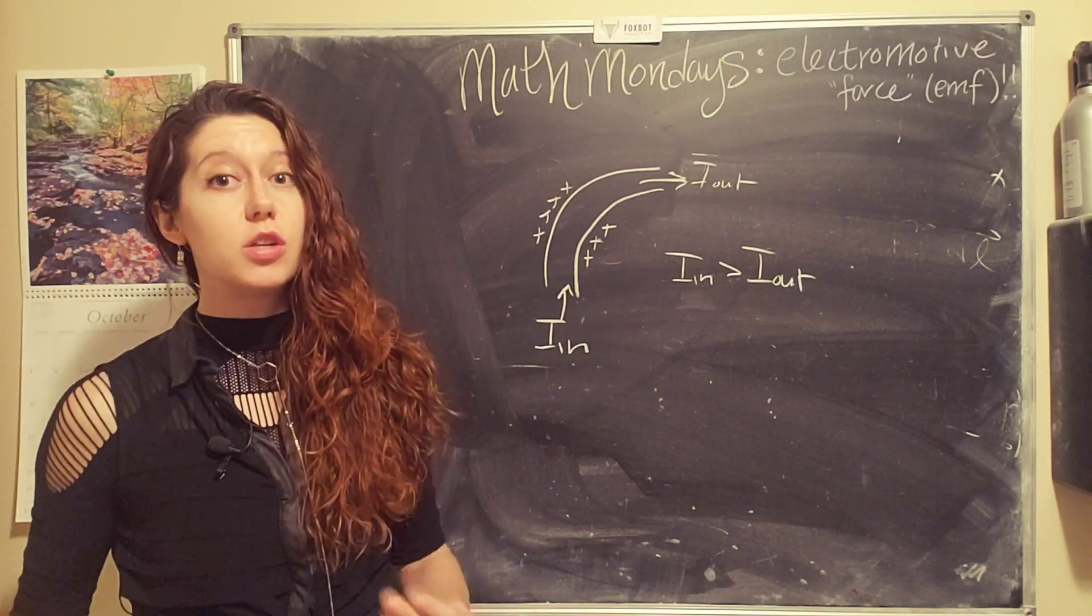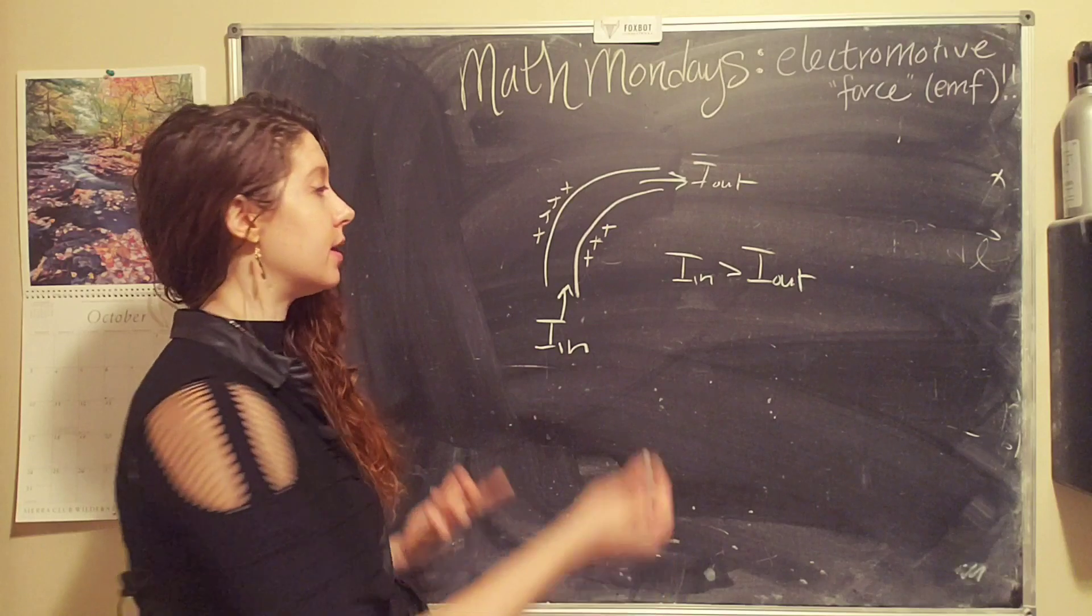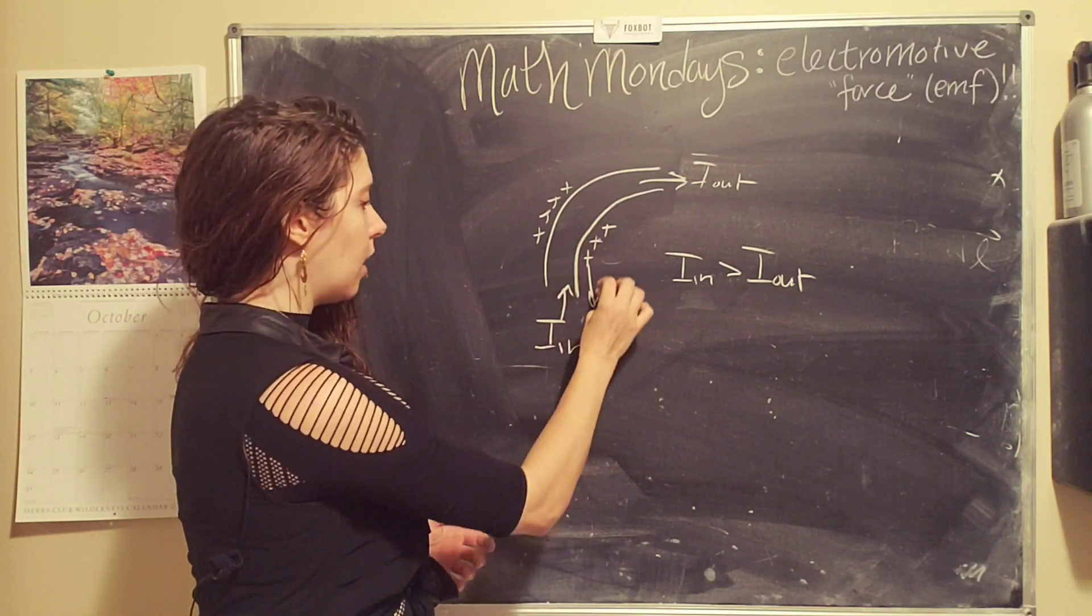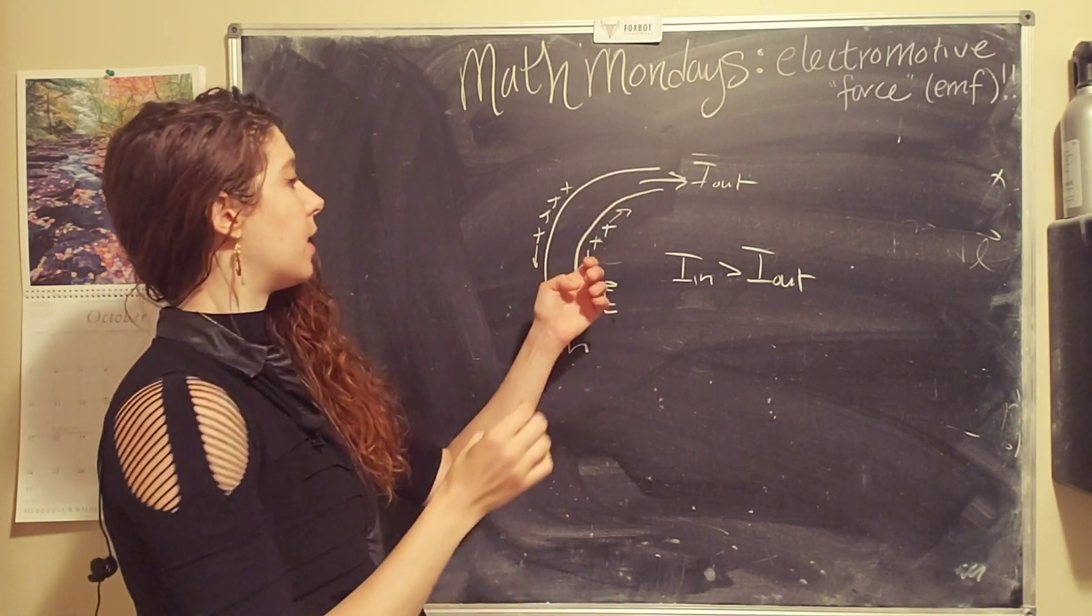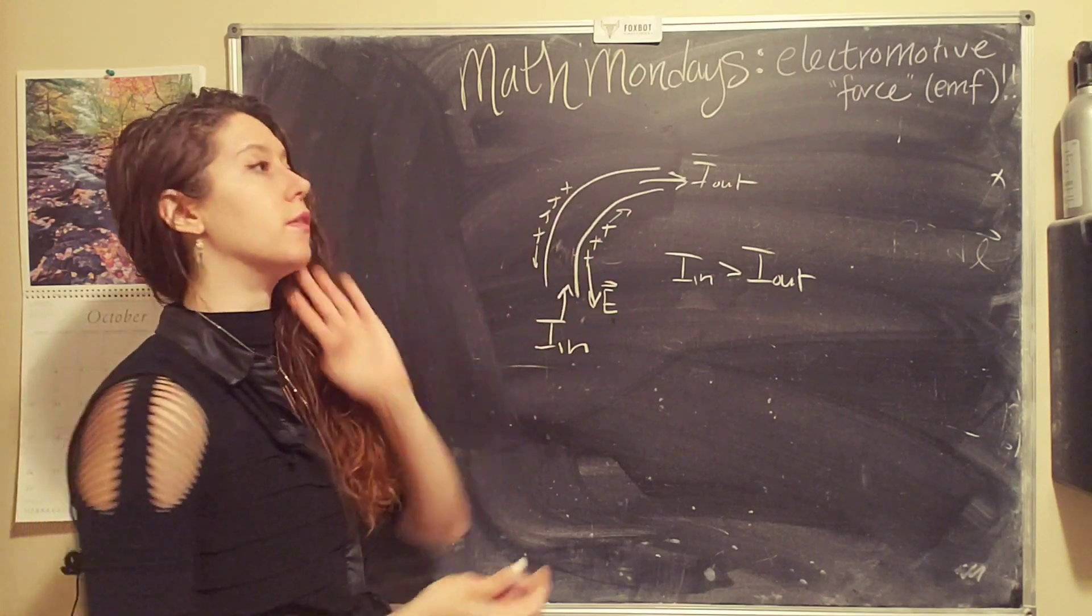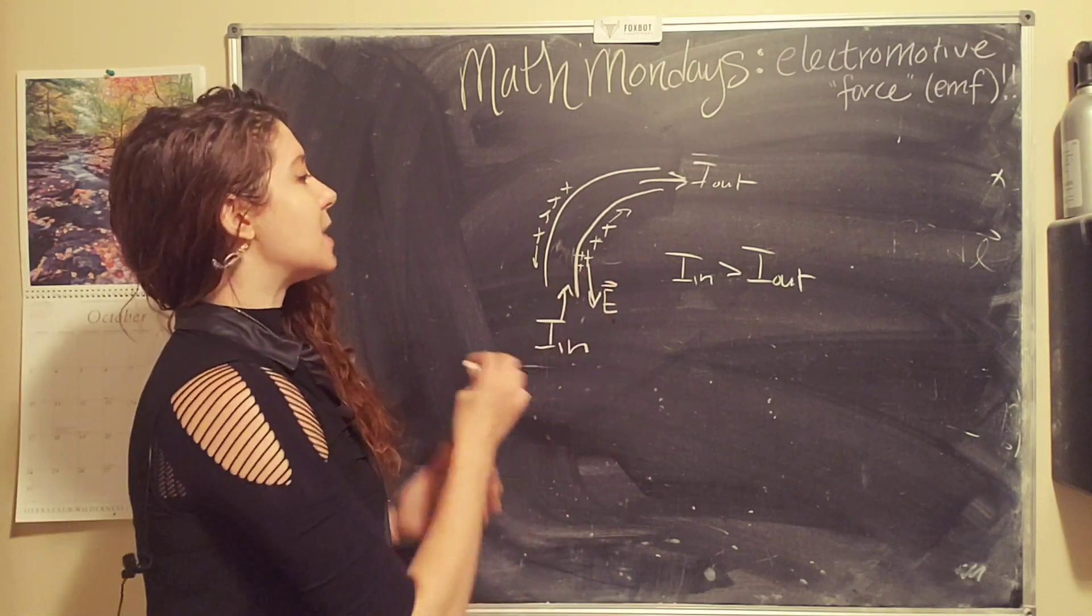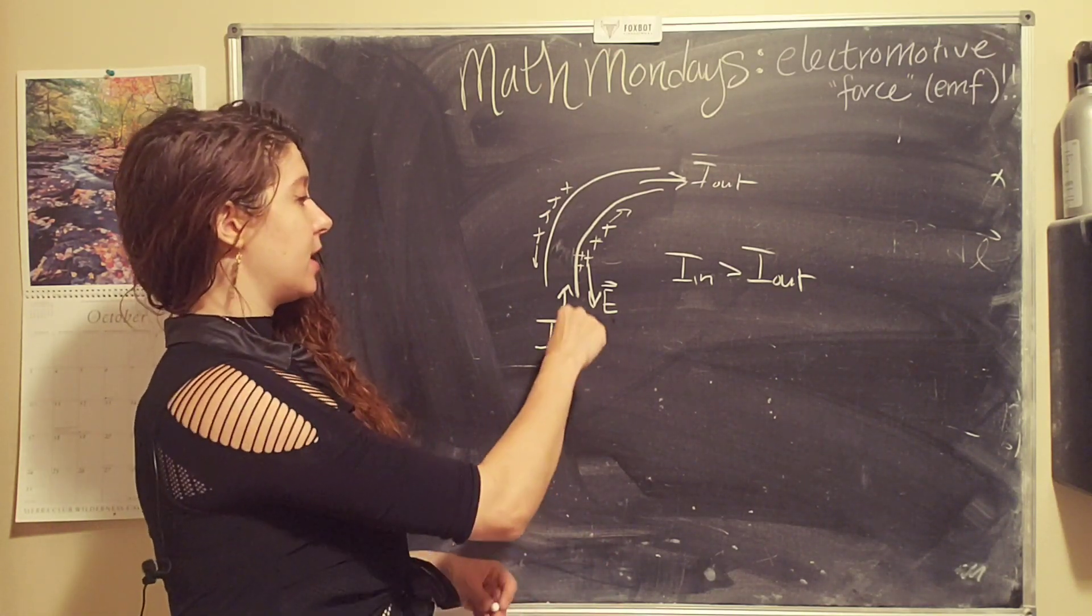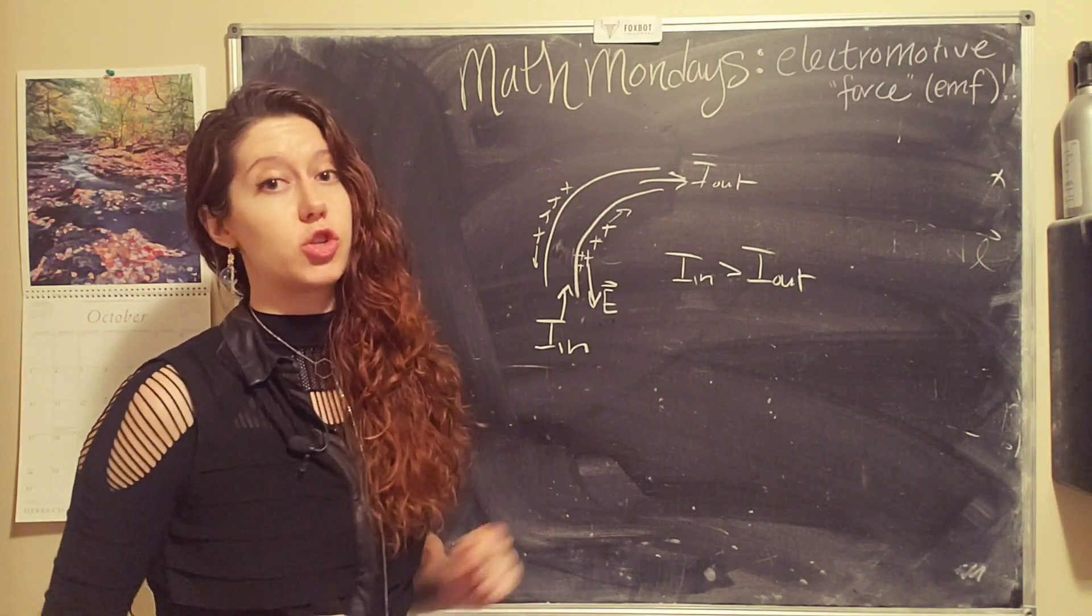Remember, each individual charge exerts a force, an electrostatic force, on the other charges around it. It starts at a positive charge and points radially outward. What's going to end up happening is that we have an accumulation of charges that have an electrostatic force that opposes this current flow, and that causes the incoming charges to slow down.